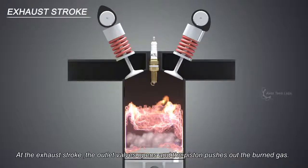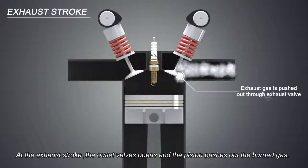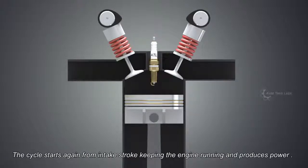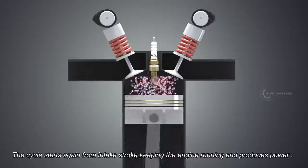At the exhaust stroke, the outlet valves open and the piston pushes out the burned gas. The cycle starts again from intake stroke, keeping the engine running and produces power.